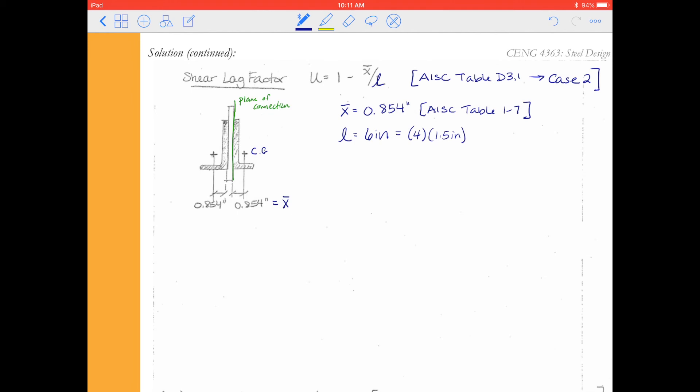Alright, doing our calculation for u, you will be 1 minus x̄, 0.854 inches, over the length 6 inches. We round that to the nearest hundredth. u for this one is 0.86. So this tells us that 86% of the angle cross-section is effective at the connection.